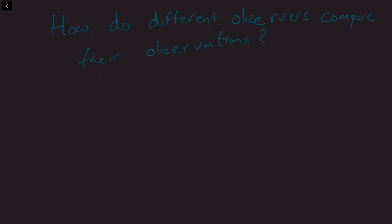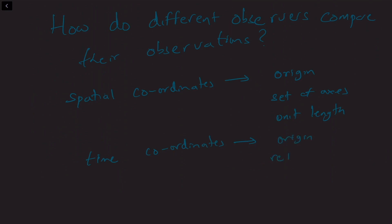Because after all, every observer is free to choose for their spatial coordinates: an origin, a set of reference axes, and their unit length or meter stick. And for the time coordinates, every observer is free again to choose an origin and a reference time interval.